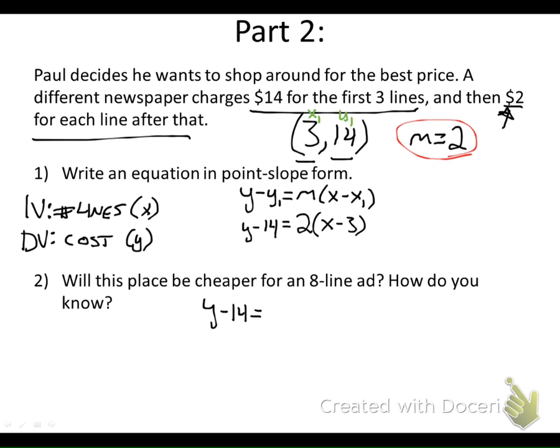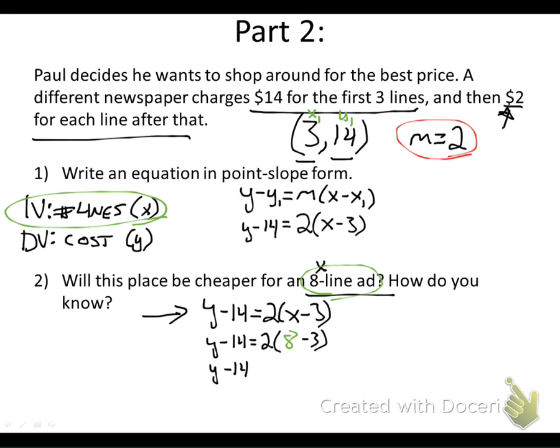Will this place be cheaper for an eight-line ad? How do you know? We can just work out this equation when X is 8, because remember the number of lines is our X or our independent variable. Let's do this the same way we did the other one. We know that Y minus 14 equals 2 times, if I want my X is 8, minus 3. My left side equation stays the same and I can simplify inside my parentheses.